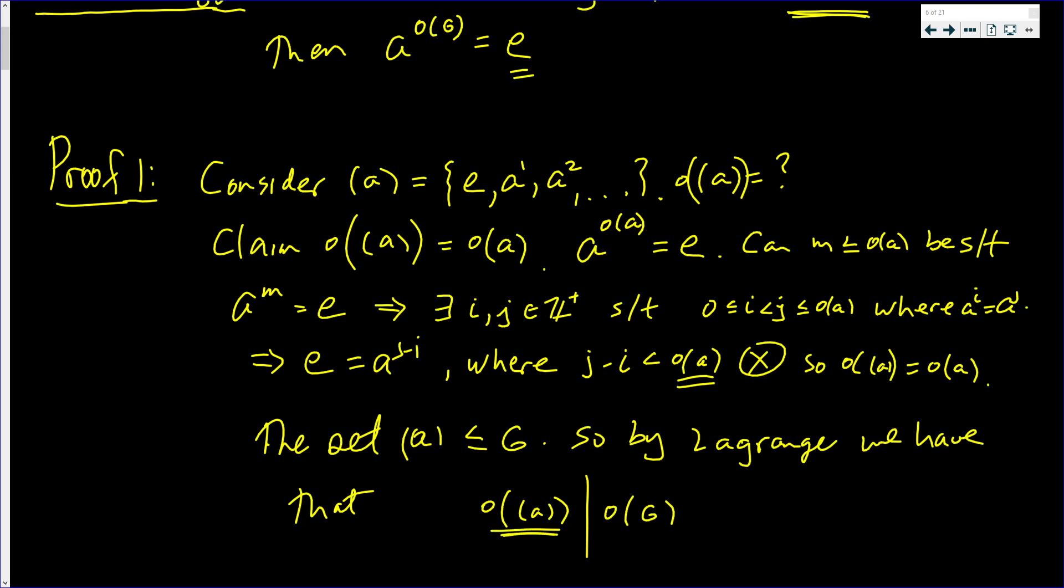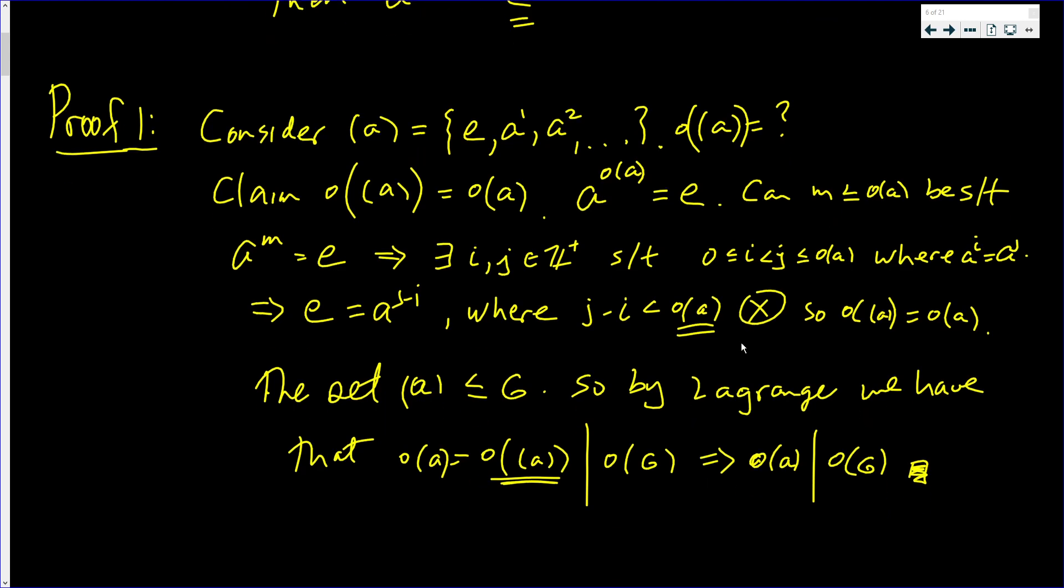But it turns out that the order of that subgroup is the order of A. That is, the order of A does divide the order of the group. And that finishes proof for part one.